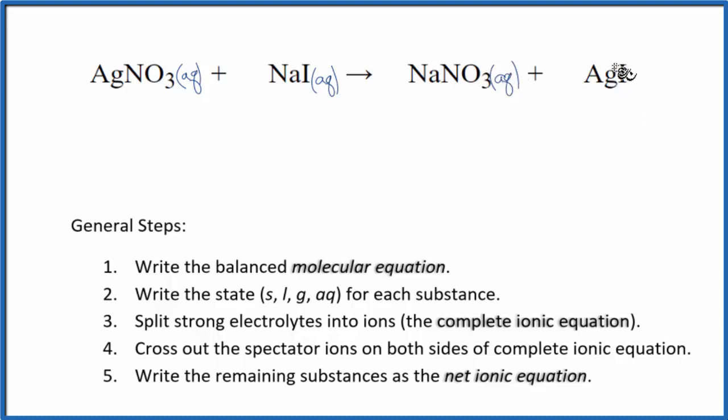We have another nitrate compound here that's going to be soluble. But AgI, this is one you should remember. When we have these silver compounds with halogens, like AgCl, AgI, that is going to be insoluble.